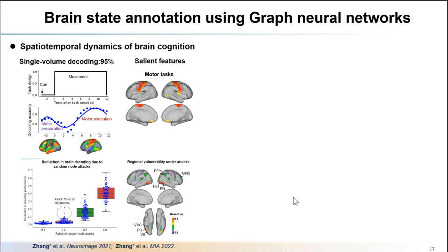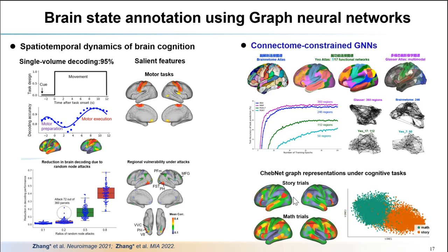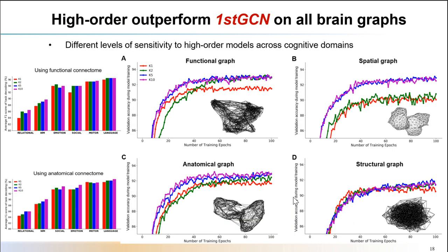In the next step, we try to optimize this decoding architecture, including choosing the best brain atlas, brain connectomes, and the construction of brain graphs. By simply modeling high-order interactions within and between brain networks, we found consistent improvements on all types of brain graphs.